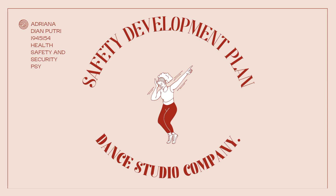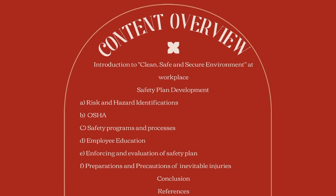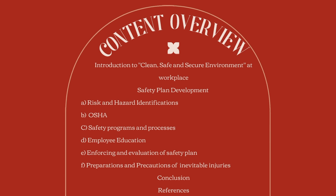This is the content overview of the presentation today. The first one is the introduction to a clean, safe and secure environment at the workplace. Second, safety plan development, which consists of six main divisions: A, risk and hazard identification; B, OSHA; C, safety programs and processes; D, employee education; E, enforcing and evaluation of safety plan; and F, preparations and precautions of inevitable injuries. The third one is the conclusion and final references for the sources used.